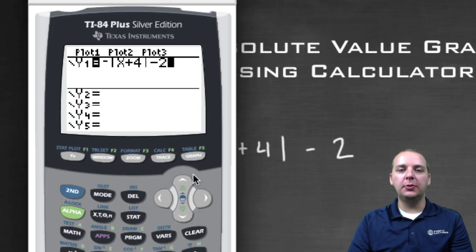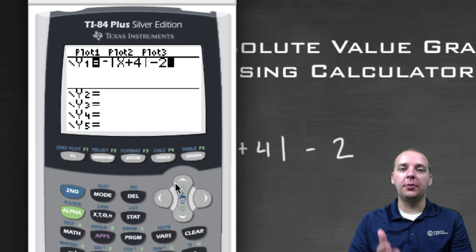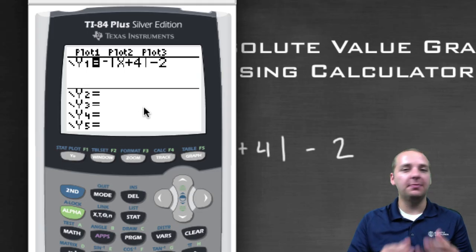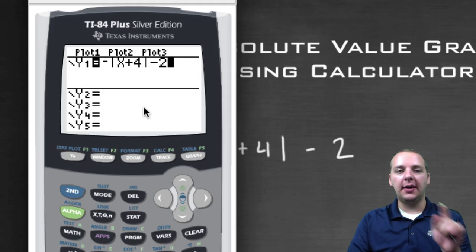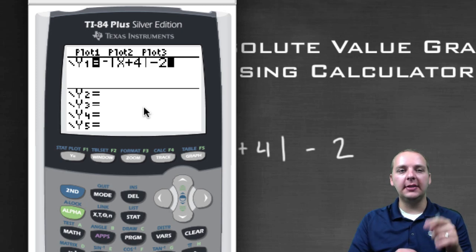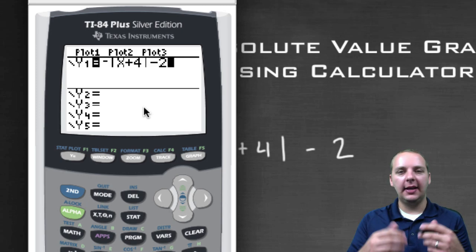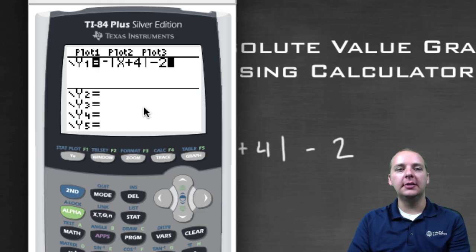Now before I push graph — some of you might have an older version of the software. Some TI calculators don't actually give the vertical bars; they continue to just say ABS. That's no big deal. You would just have negative ABS, parenthesis, x plus four, close parenthesis — and that also means absolute value of x plus four.